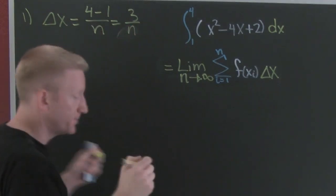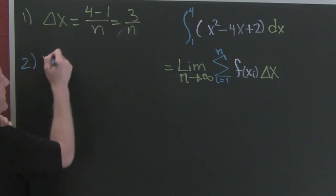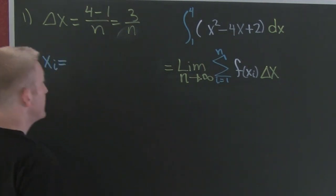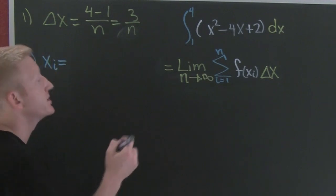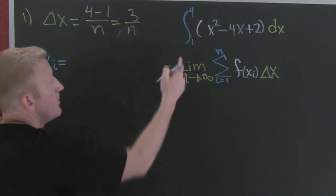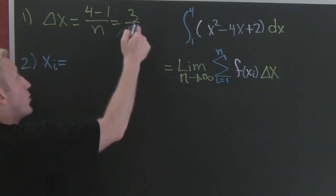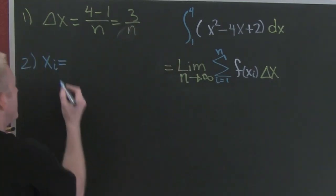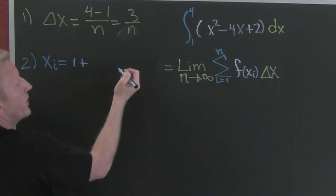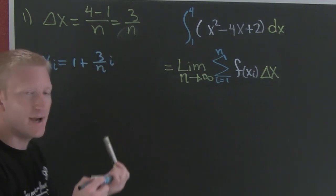Step two: we need to find our xi. We can reason it out by finding a few different x's — x naught, which is my lower limit; then x1, which is the lower limit plus delta x; then x2, which is my lower limit plus twice delta x. So xi is going to be 1 plus 3 over n times i.